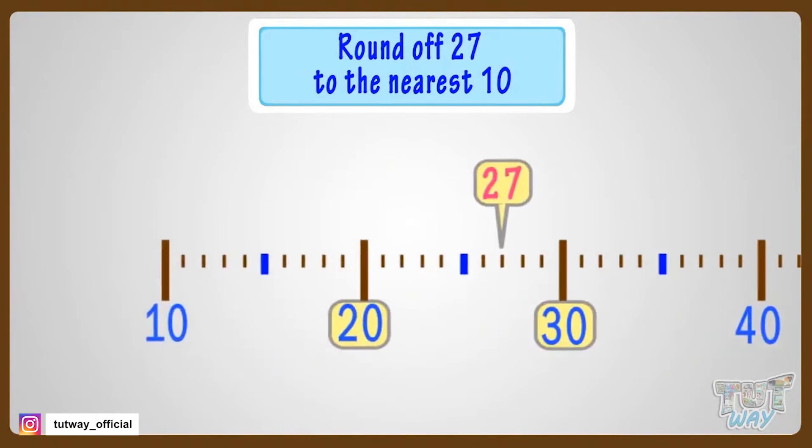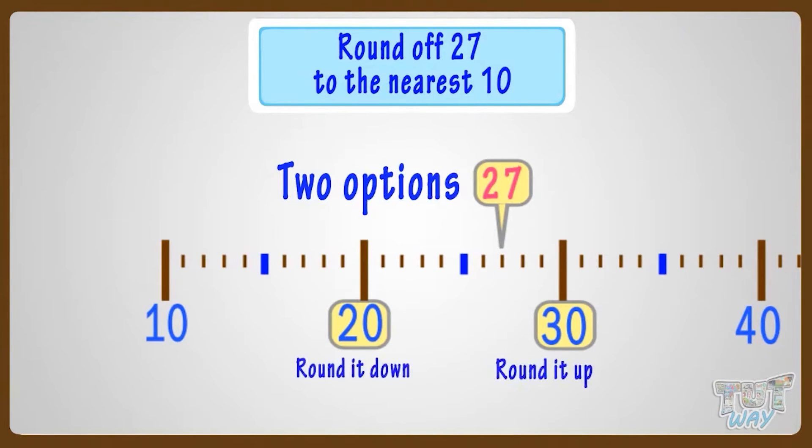And we know whenever we have to round a number, we always have two options. Either we round it up or round it down.